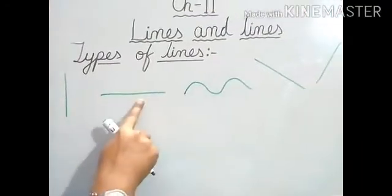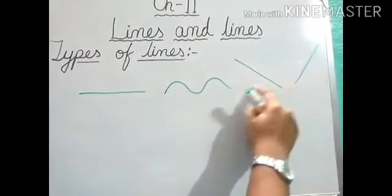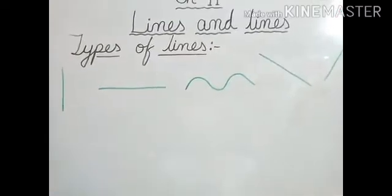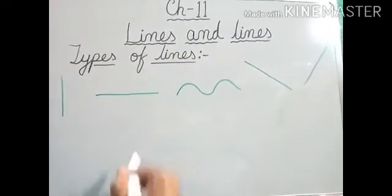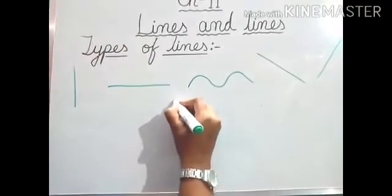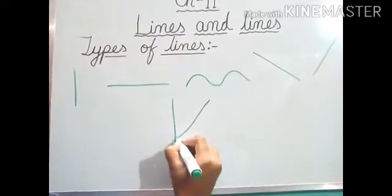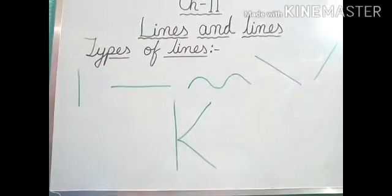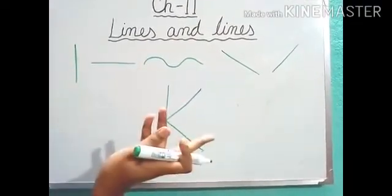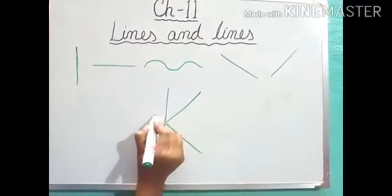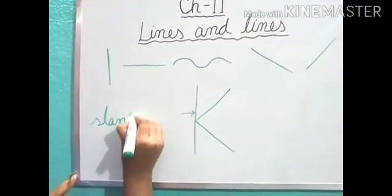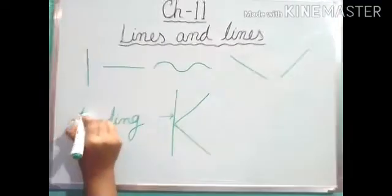So, Standing line, Sleeping line, Curve line, and like this will be Slanting line. Here I am going to write one alphabet and you tell me which line is this in that alphabet. So, if I write alphabet K. So I have written K here. This one — like this — is what type of line? Standing line. So this line is Standing.